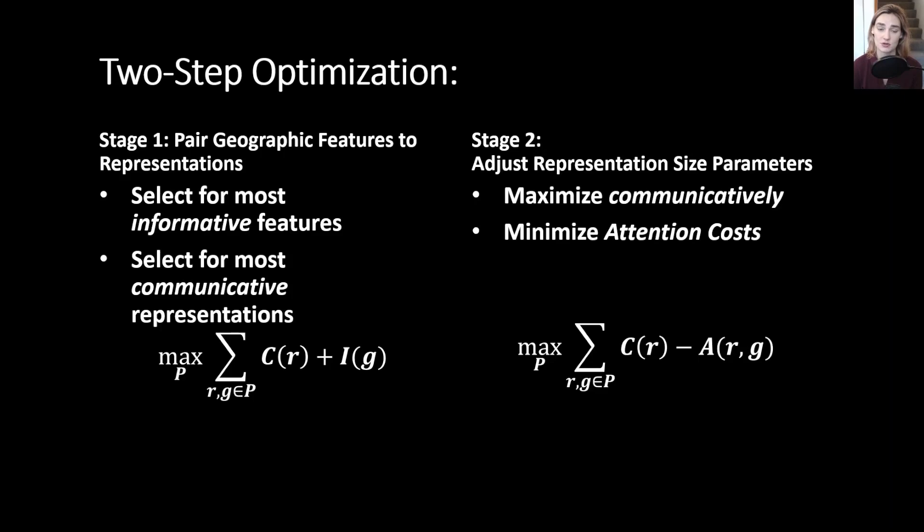In the first stage, we pair geographic features to representations, essentially creating a legend of the map. We select for the most informative features and the most communicative representations, trying to maximize the usage of different communicative representations paired to different high-valued information.